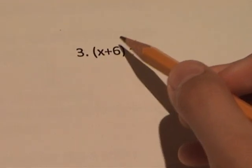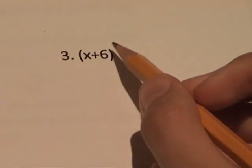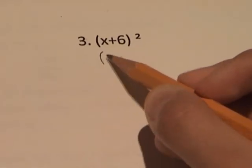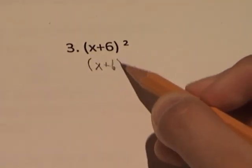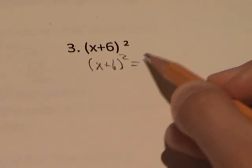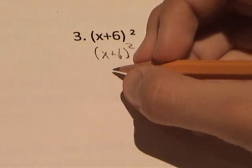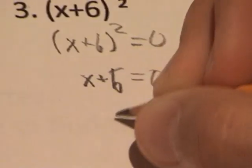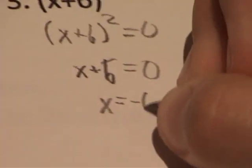This is one of them where it's the factored form of a perfect square trinomial. So it would be x plus 6 squared equals 0. Take the square root of both sides, x plus 6 equals 0, so x equals negative 6.